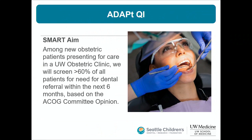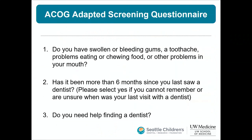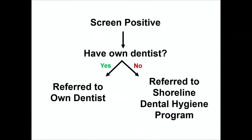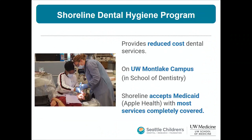ACOG recommends screening all pregnant patients at the first OB visit for need of a dental referral, but we were screening zero percent of our patients. We set a quality improvement SMART aim of improving screening to greater than 60% over six months. ACOG provides three screening questions: Do you have swollen or bleeding gums, a toothache, or problems eating? Has it been more than six months since you last saw a dentist? Do you need help finding a dentist? A 'yes' to any is a positive screen.